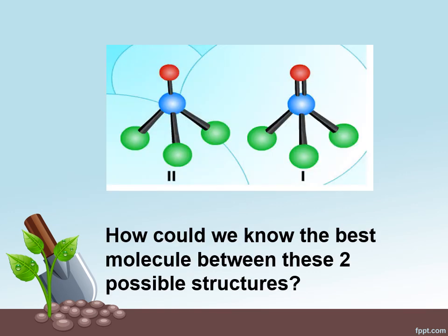As you can see, between these two molecules, there is a double bond between the atom of red color and blue color for structure 1. So how could we know the best molecule between these two possible structures?